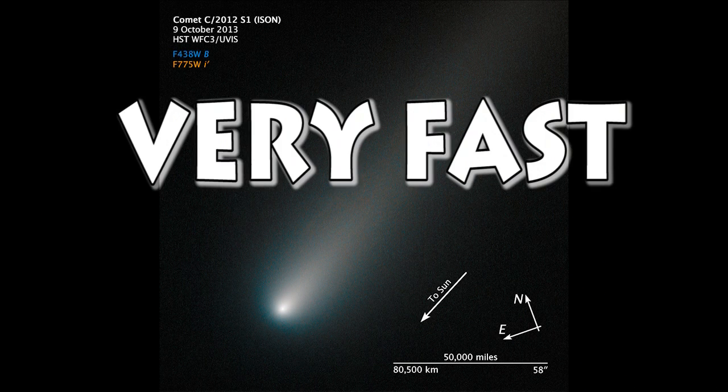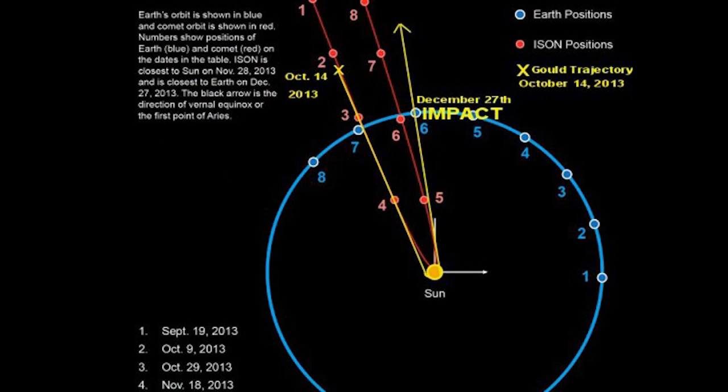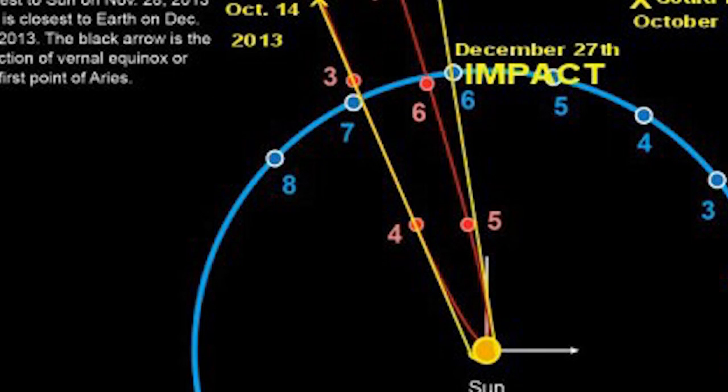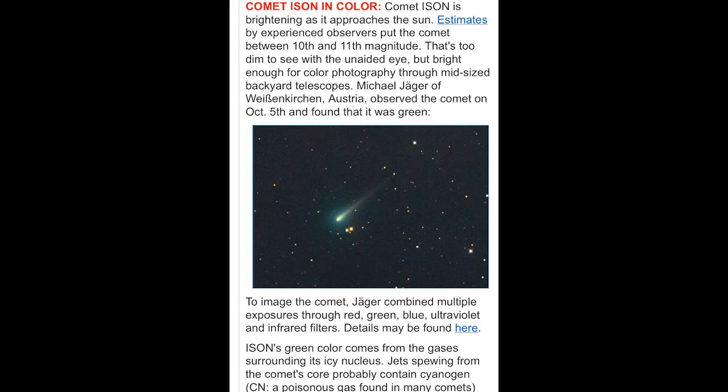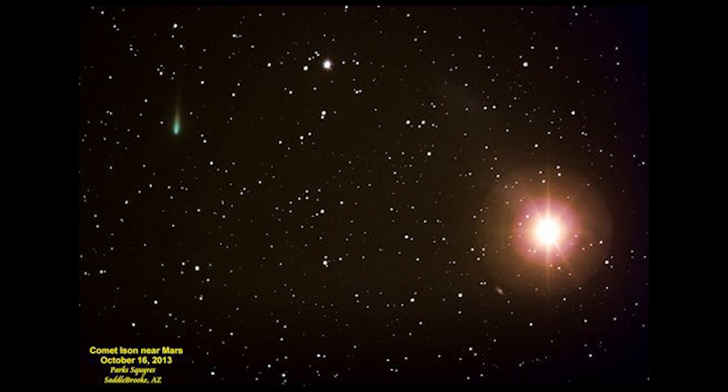Number two. ISON is traveling at a speed of... Number three. ISON is still on its projected and predicted orbit and trajectory. Four. ISON, the holiday comet, is green and turning red.